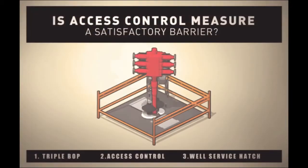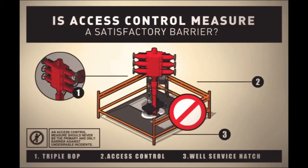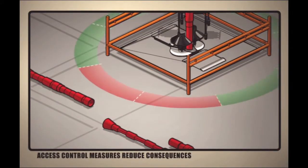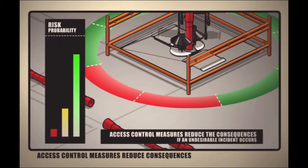An access control measure should never be the primary and only barrier against undesirable incidents. An area is cordoned off to reduce the consequences of an undesirable incident occurring as a result of the activities being carried out in the area.